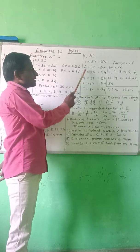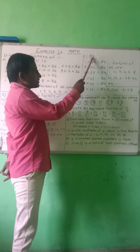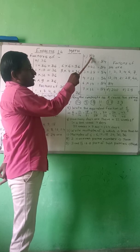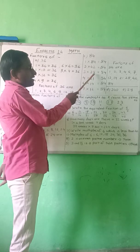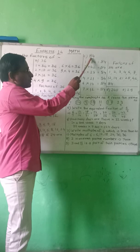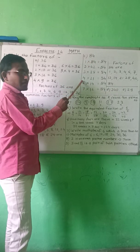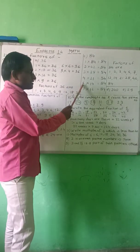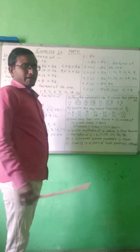Next, 3. Check if 3 divides 84: 3 times 28 is 84. Then next, 4: 4 times 21 is 84, so write 4 multiplied by 21 is equal to 84. Then 5 is not completely divisible by 84, so check the next number.